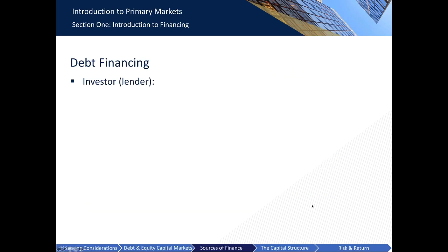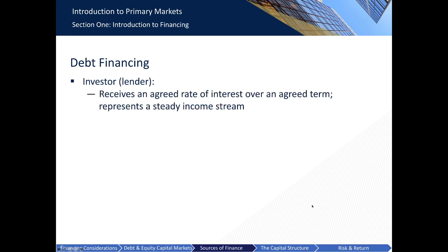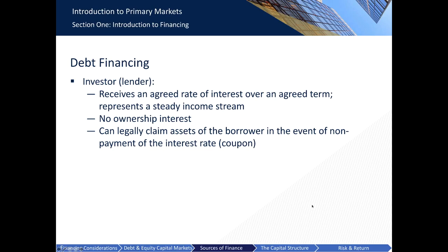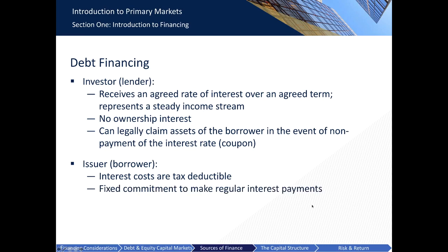Debt investors provide financing in exchange for an agreed rate of interest over an agreed period of time and the eventual repayment of the debt. The payment of interest represents a regular income stream for investors. While the lender gains no ownership interest, they can legally claim assets of the borrower if the debt is not repaid. From an issuer's perspective, interest rate costs are tax deductible, so the net cost of debt is the amount of interest payable less the amount saved in taxes. However, the issuer is liable for the risk of making regular interest payments, so raising debt increases a fixed commitment. In terms of relative risk, debt is risky for the firm, while equity is risky for the investor.